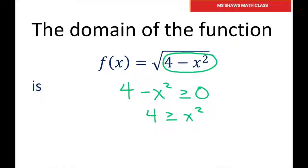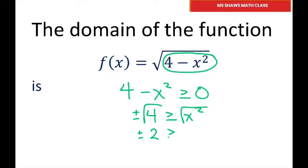Basically what I could do is just factor this, or you could take the square root of both sides. So you get plus or minus square root of 4, which is 2, is greater than or equal to x. Or you could say x is less than or equal to plus or minus 2.